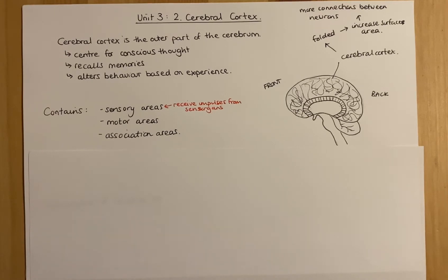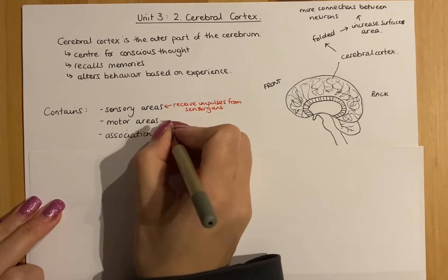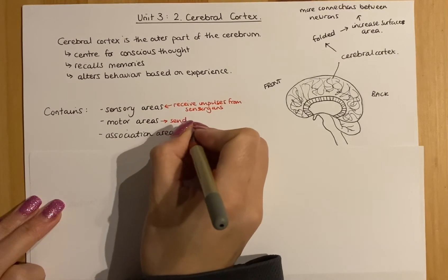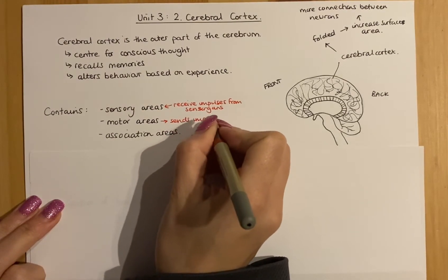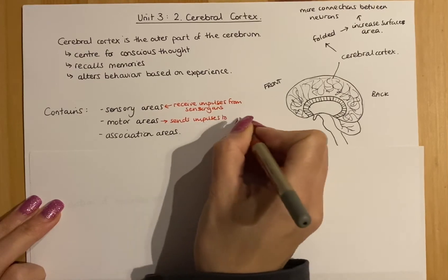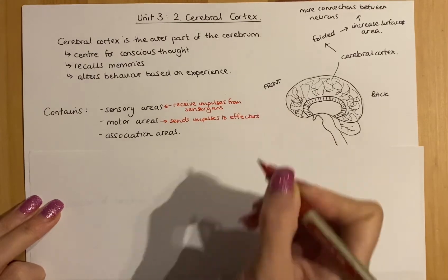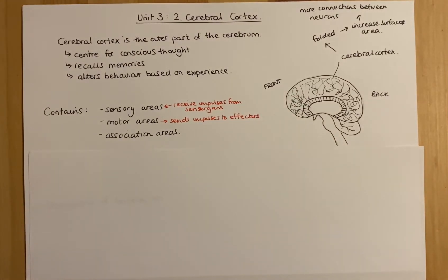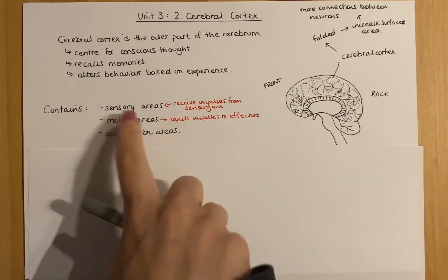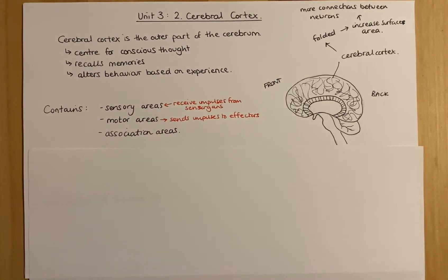Your brain processes that sensory information and then sends impulses from what's called the motor area. The motor area sends impulses to effectors so that you can carry out responses — for example, a muscle contraction. So if you see something coming towards you and decide to respond, it's brought in by your sensory area but then acted upon by your motor area.